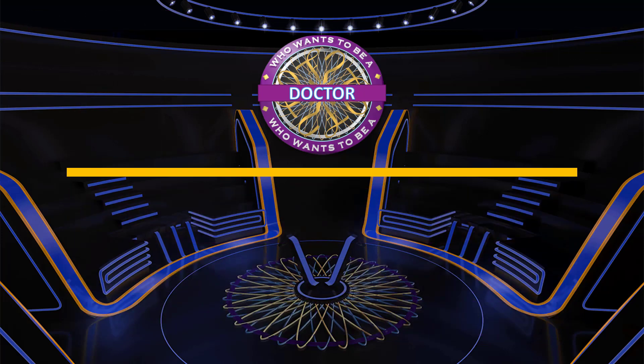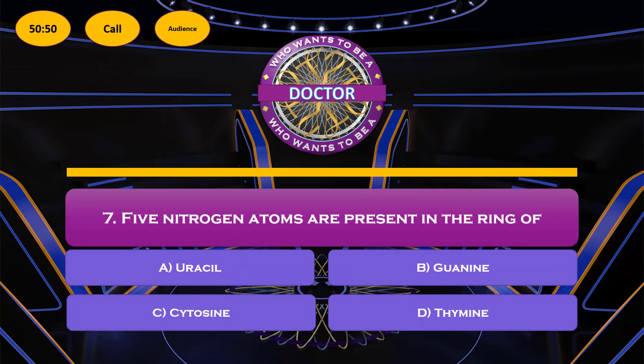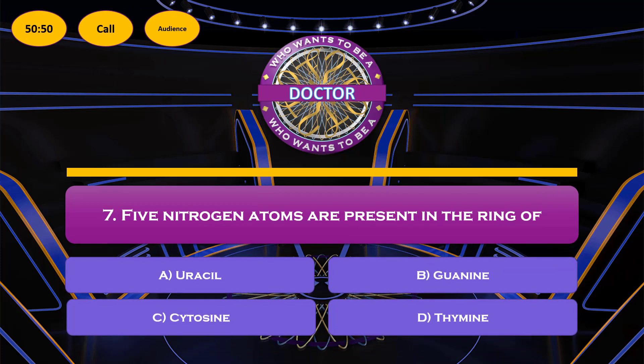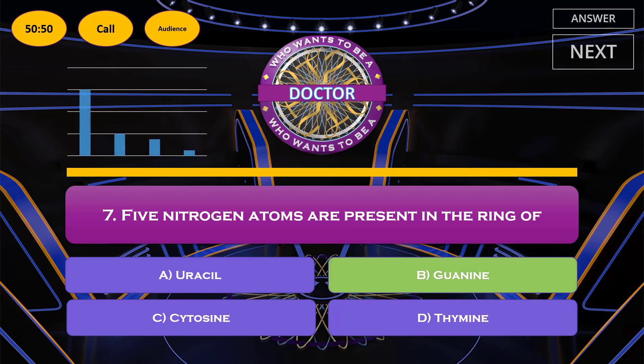Question number 7: 5 nitrogen atoms are present in the ring of — option A: uracil; option B: guanine; option C: cytosine; option D: thymine. The 5 nitrogen atoms are present in option B, guanine.